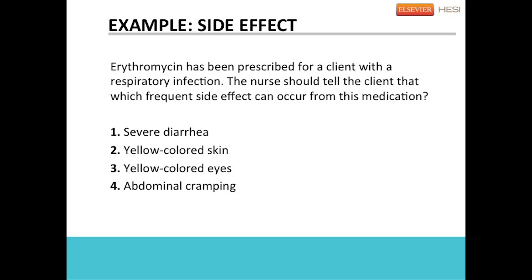When we look at options two and three, we see yellow-colored skin and yellow-colored eyes. Yellow coloring indicates jaundice, which is definitely an adverse effect from a medication. So we have option four left, which is abdominal cramping. Abdominal cramping is definitely a side effect, not an adverse effect of the medication.